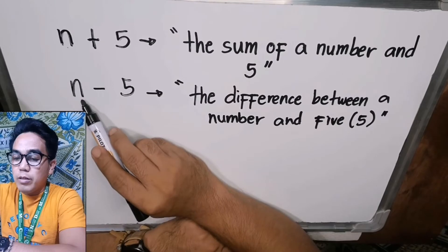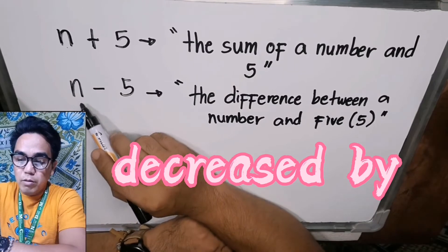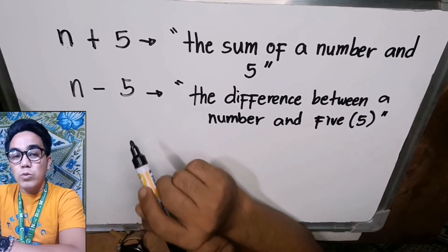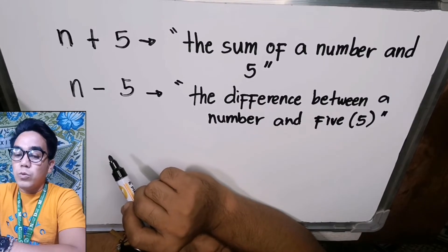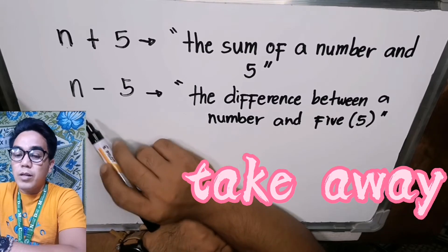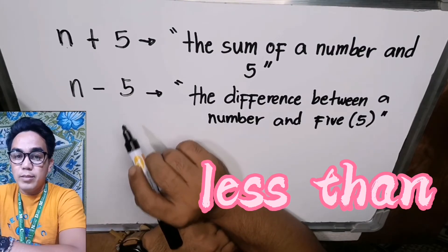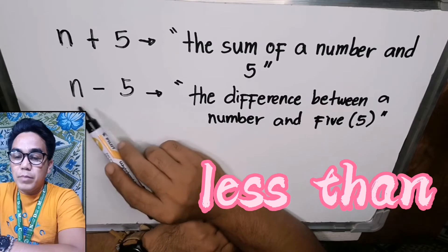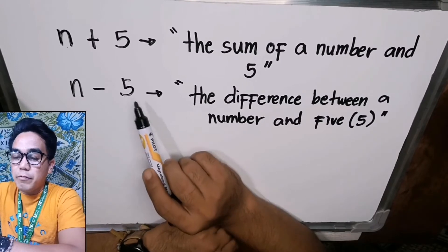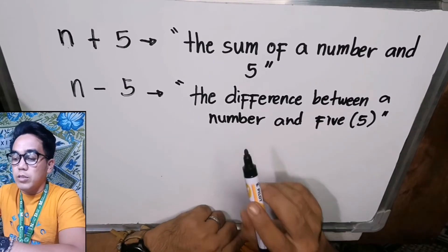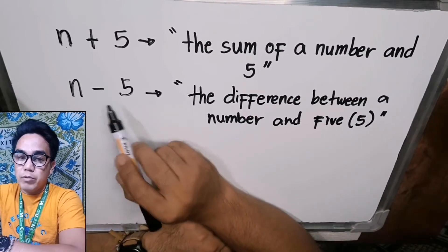Aside from 'difference,' we can also say 'a number diminished by five,' or 'a number decreased by five,' or 'a number less five,' or 'a number take away five.' But if we use the phrase 'less than,' the order of the minuend and subtrahend will change — we use five as the minuend, giving us 'five less than a number,' which means n minus five.